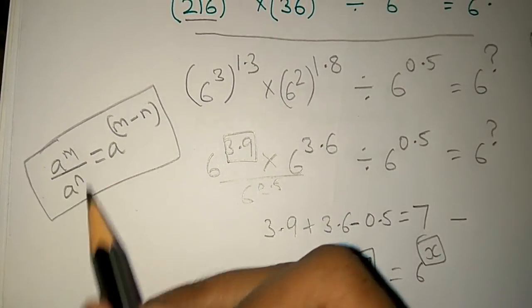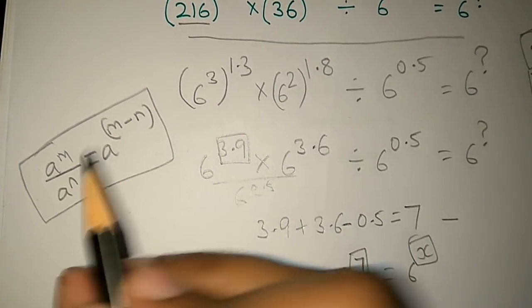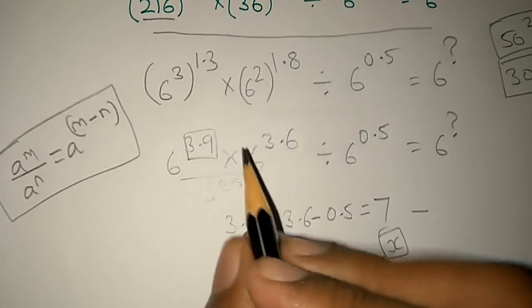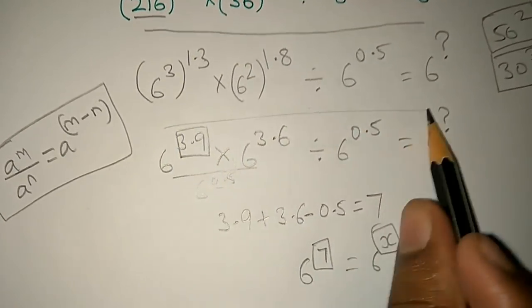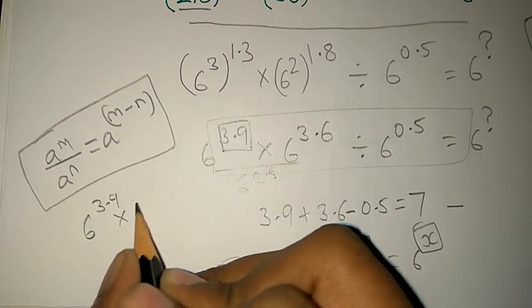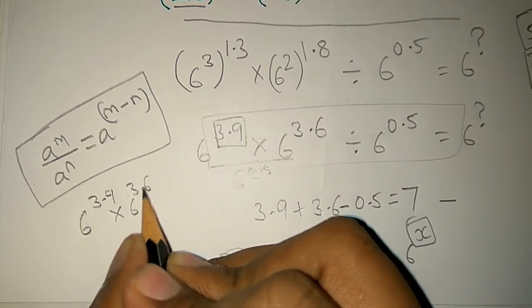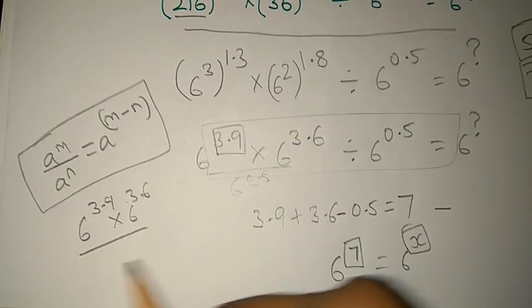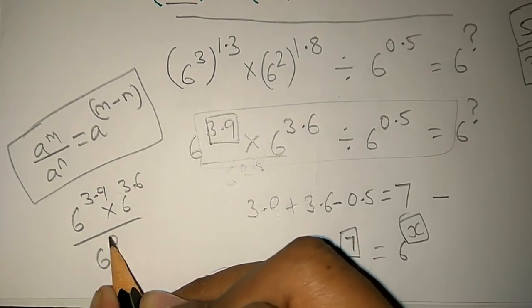Let me explain the power rules. For a power m multiplied by a power n, we add the exponents. So 6 power 3.9 into 6 power 3.6 divided by 6 power 0.5.